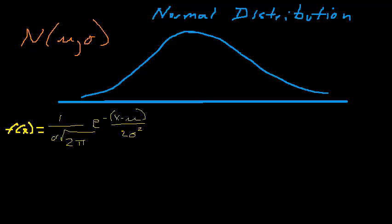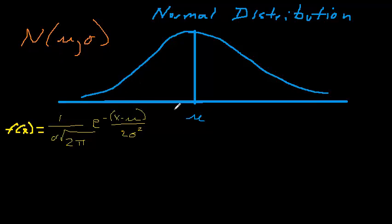The distribution is symmetric around the mean — the midpoint of the curve is the mean, and the left side should be a mirror image of the right side. The two tails are asymptotic to the x-axis: they approach zero but never quite get there. They approach zero faster or slower — at a greater or lesser distance from the mean — depending on the standard deviation.